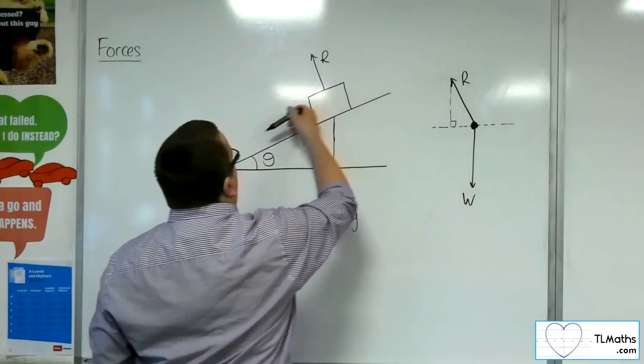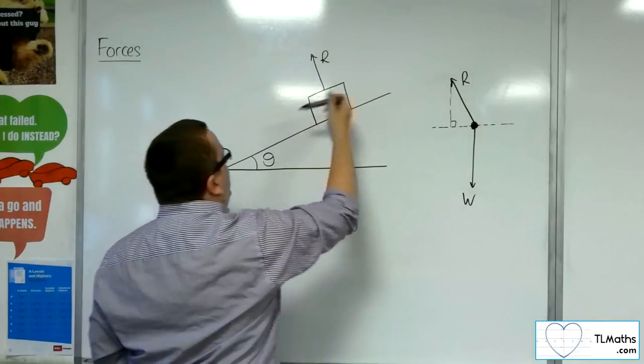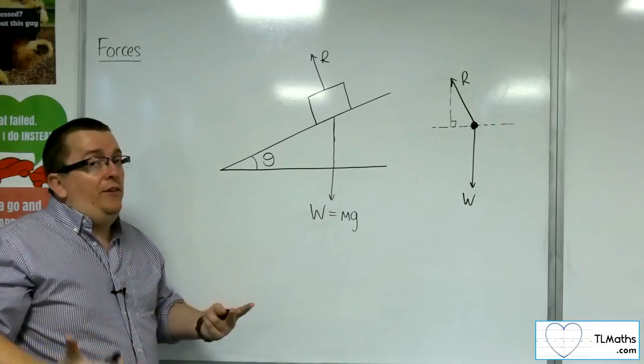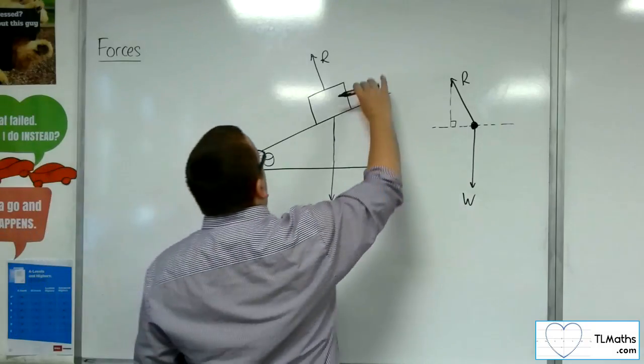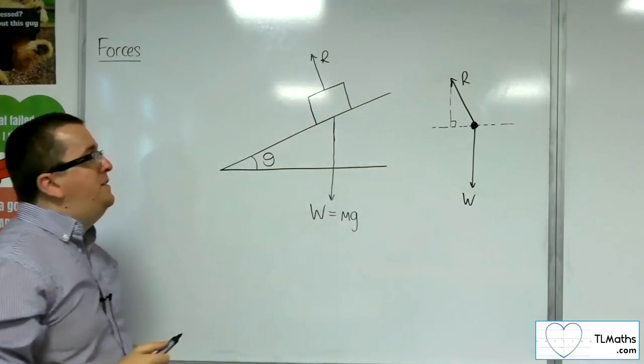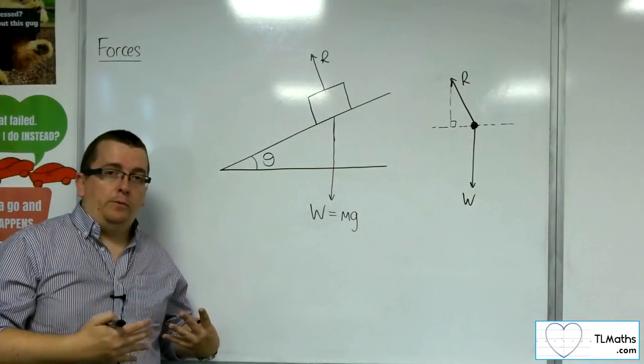I don't want to have to deal with SUVAT and I'm looking at a 2D SUVAT rather than a one-dimensional SUVAT. It would be a lot easier if I just look at how the block is moving up and down the slope, parallel to the slope.